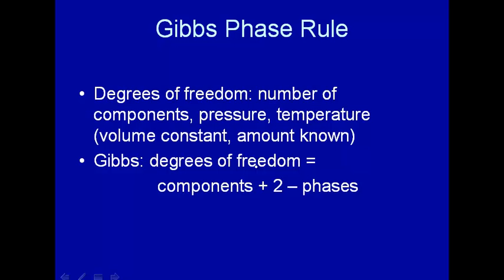It says that the degrees of freedom in a system is equal to the number of components in the system plus two minus the number of phases in the system. And remember from a previous part of this lecture, degrees of freedom are the number of components, the pressure and the temperature.